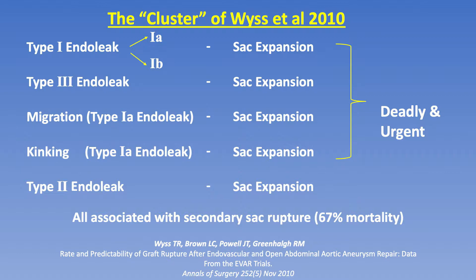It occurred in these various categories: type 1 endoleak, either type 1A or type 1B; type 3 endoleak; migration which implies a type 1A endoleak; kinking which implies a type 1A endoleak or a type 2 endoleak. But type 2 endoleak only seemed to be important in causing secondary rupture when there was sac expansion. And so this alerted us for the first time to the importance of sac expansion.